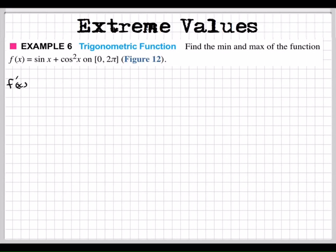First thing we've got to do is find the critical points. We already know the endpoints, so we have f of 0 and f of 2π. We're going to have to test those values to see if they're maxes or mins. But we also need to find the critical points.